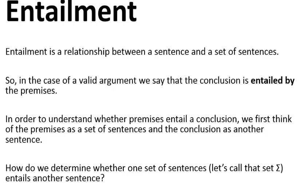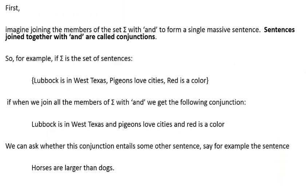How do we determine whether one set of sentences entails another sentence? We're going to call the set of sentences sigma — the uppercase Greek letter sigma — and that's the name of the set of sentences we'll identify as premises. What we're going to do is join all of the members of sigma together with ANDs, stringing them all together to form one large sentence — a conjunction of all of the members of the set sigma.